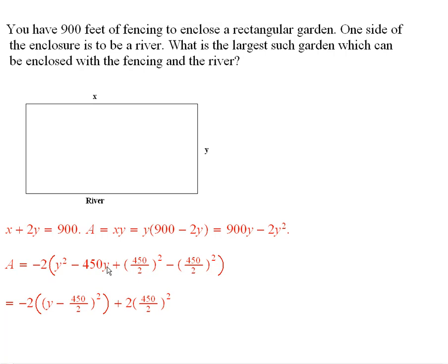And then we take half of this and square it and add it in and subtract it off. And then this material here becomes a perfect square. And so when I multiply through by the negative 2, I get this right here.